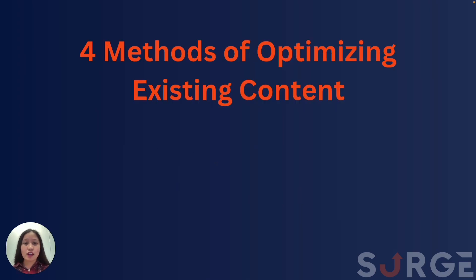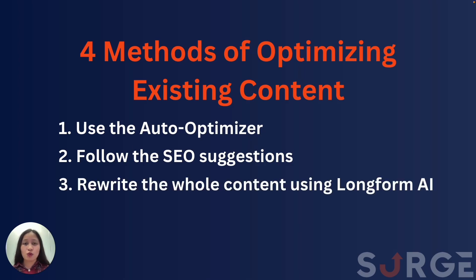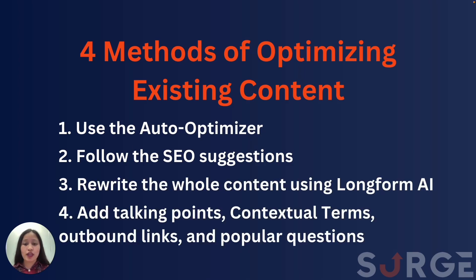There are four methods of optimizing your existing content with SearchGraph. First is using the auto-optimizer. Second is following the SEO suggestions. Third is rewriting the content with long-form AI. And fourth is adding talking points, contextual terms, outbound links, and popular questions. In this video, we'll go over each of these four methods.